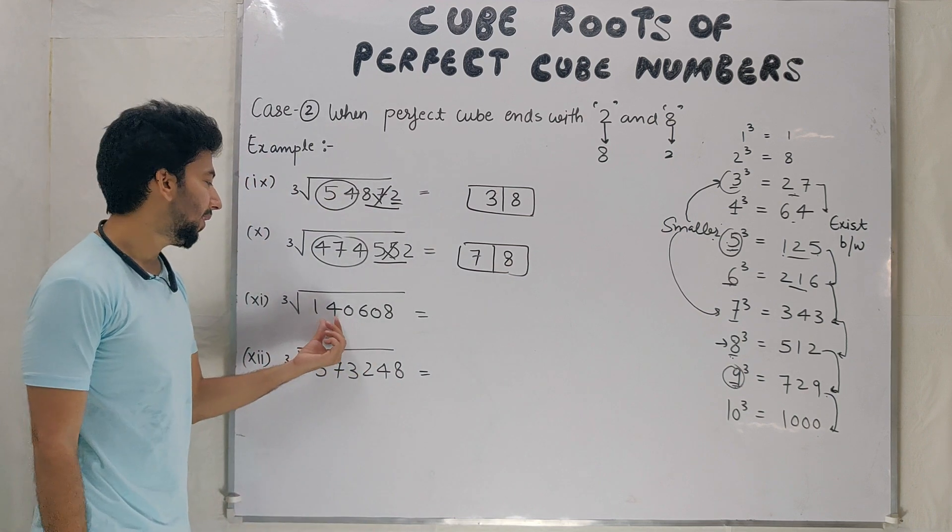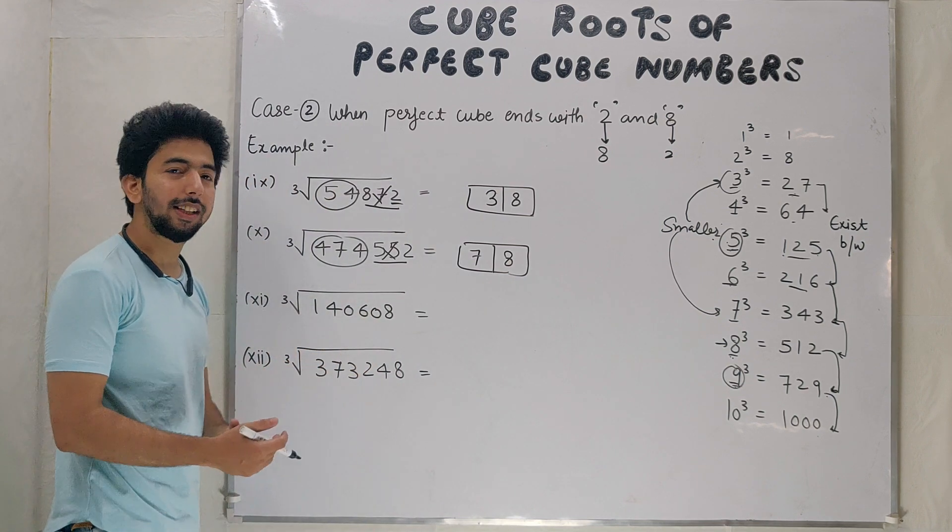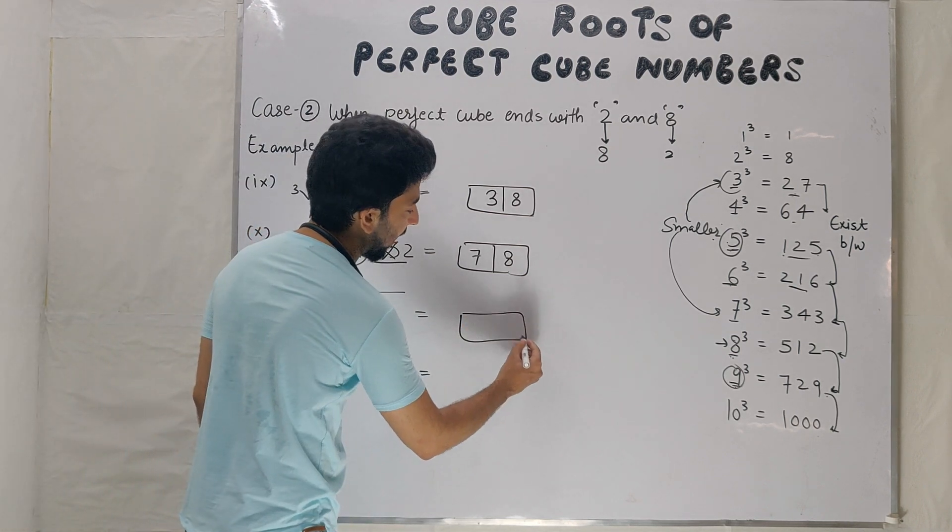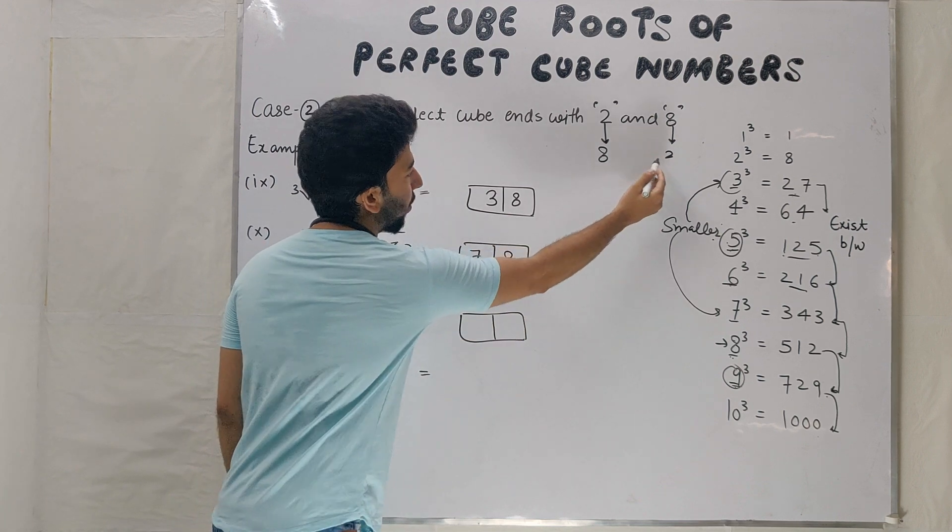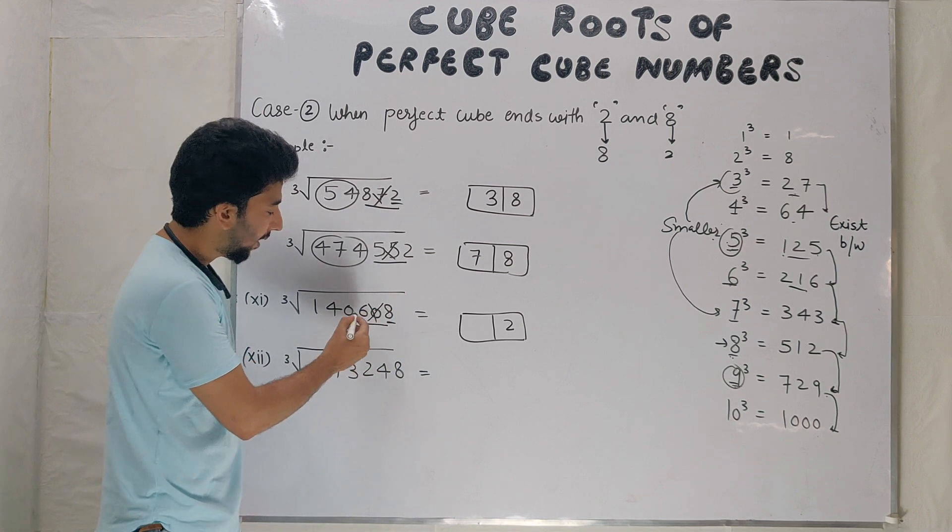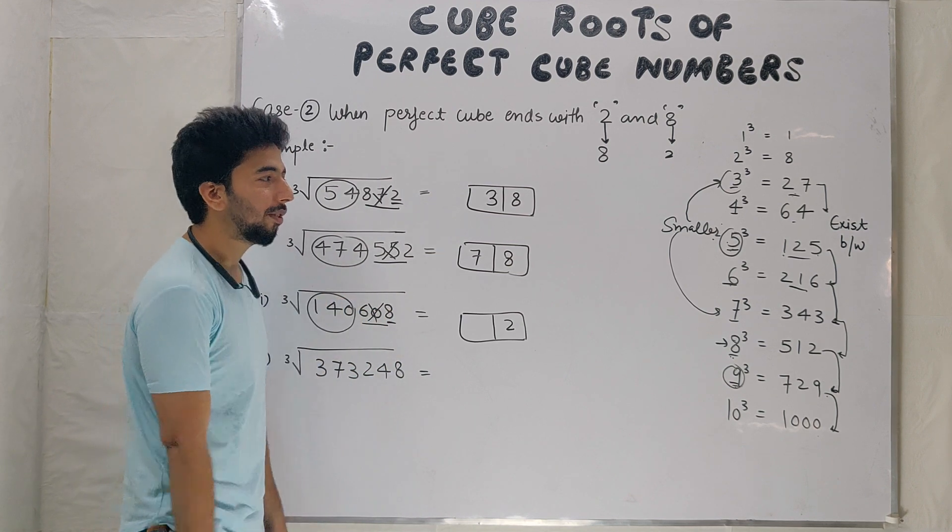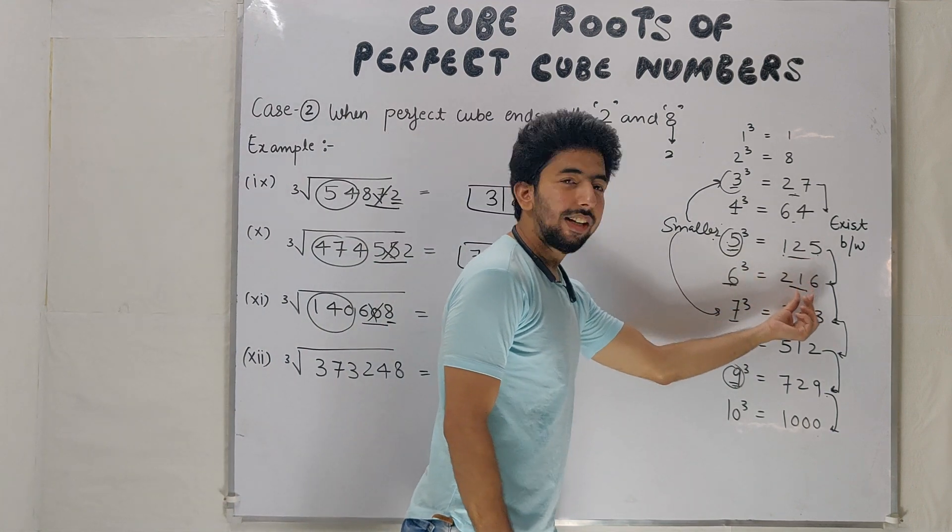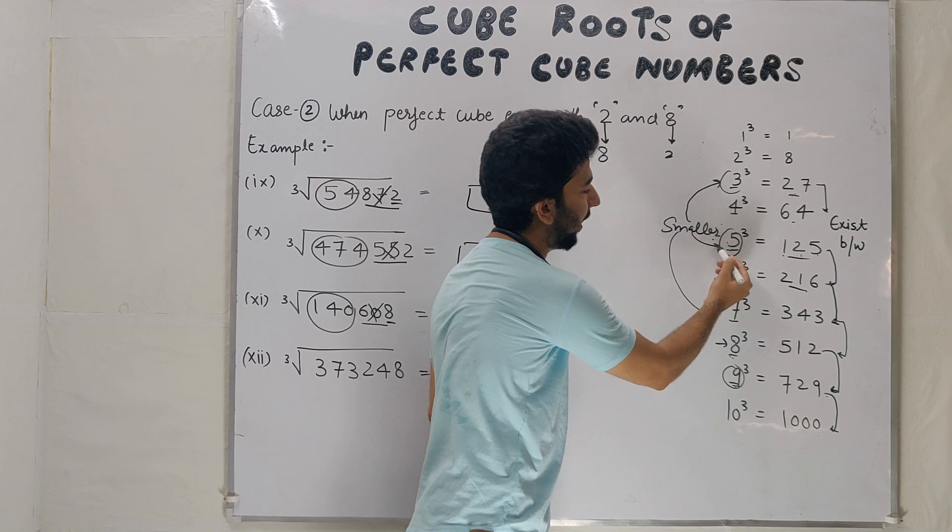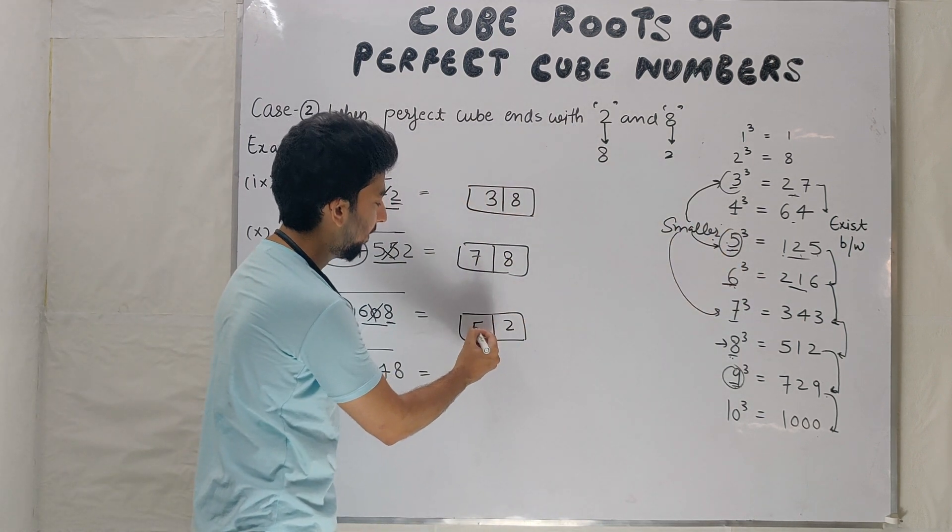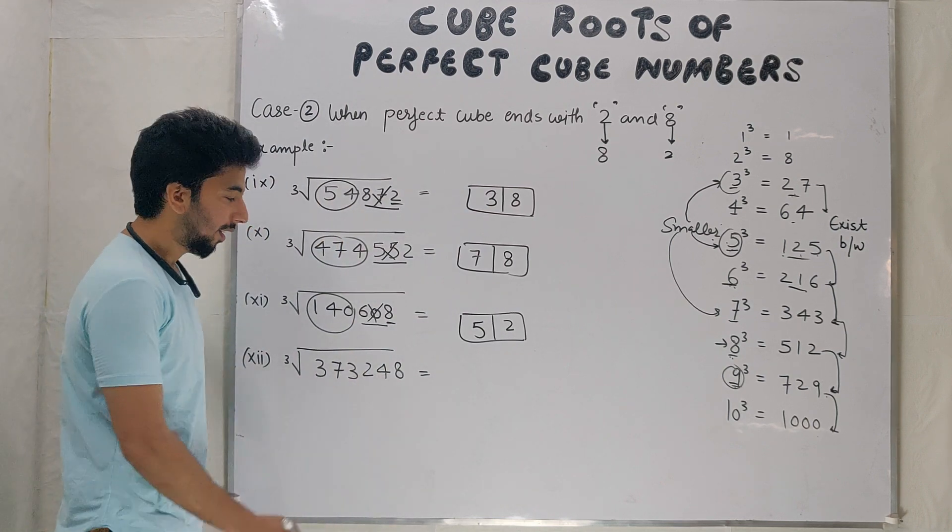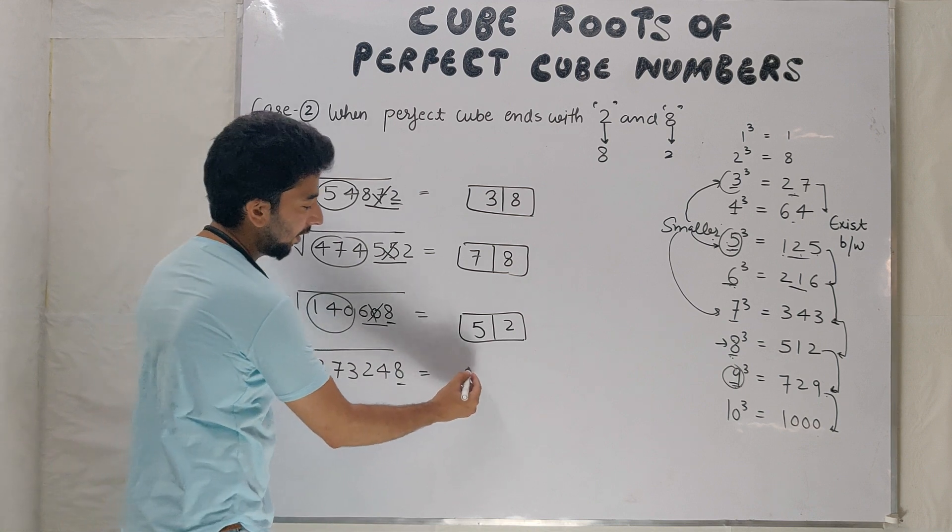Example number 11: 140608. Ends with 8, unit place 2. Cancel 3 digits, 140. Between 125 and 216, 5 and 6, smaller one 5, so 52. Example number 12: 373248. Same, ends with 8, unit place 2.